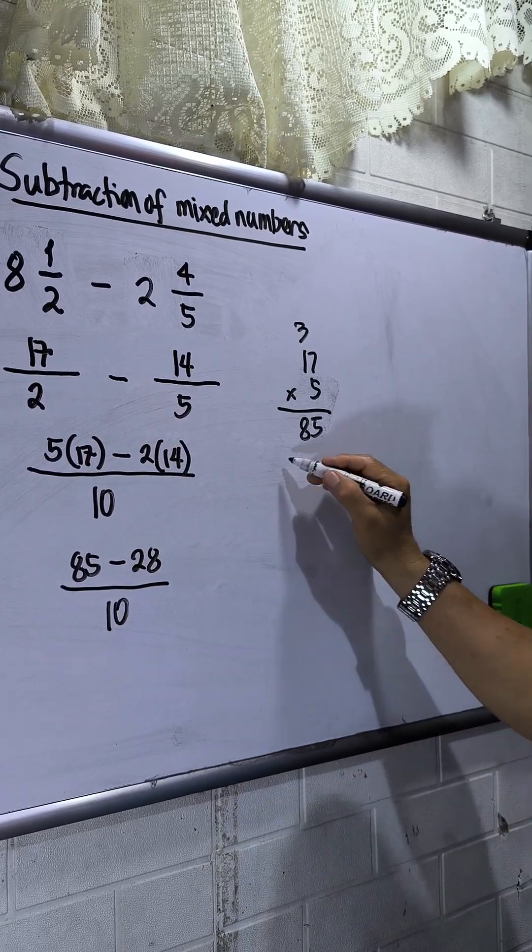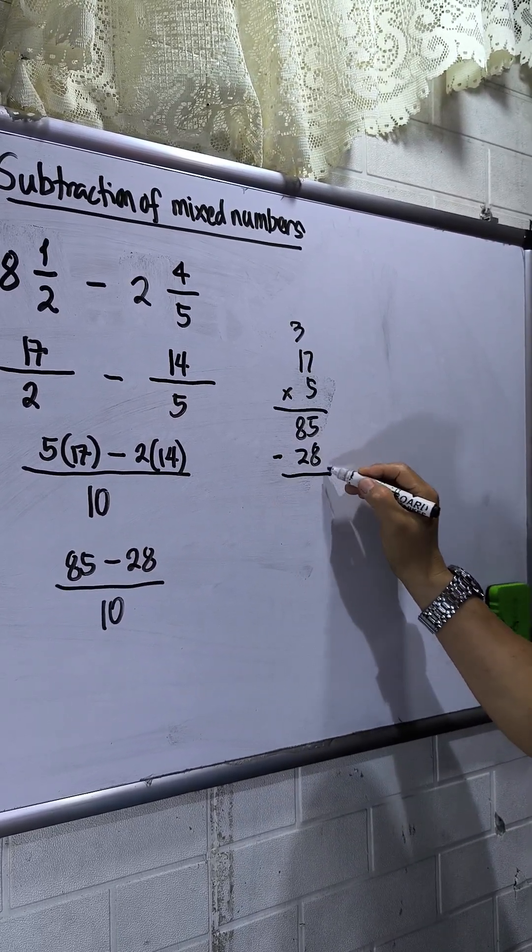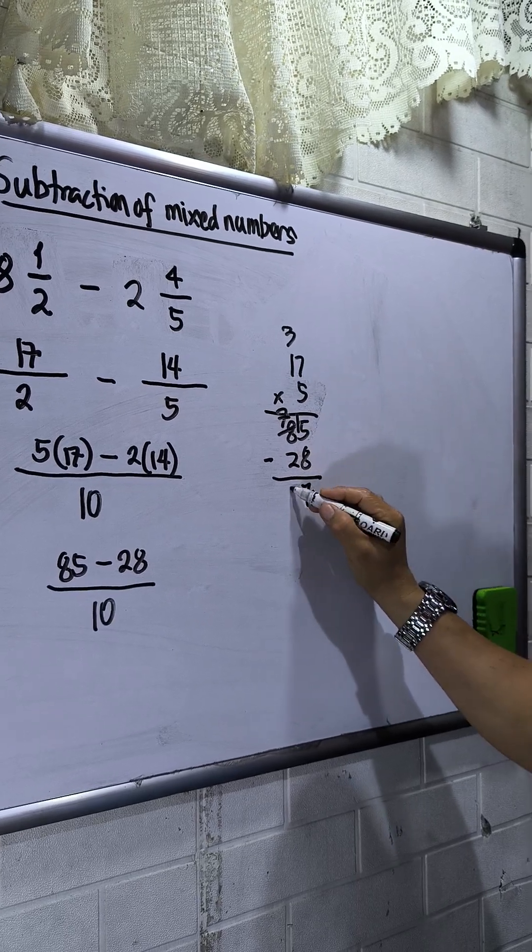Then over 10, so 85 minus 28. Borrow, this will be 15, 7, this is 5.